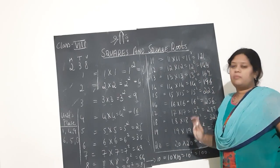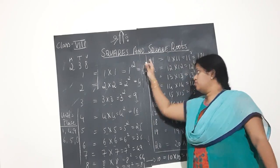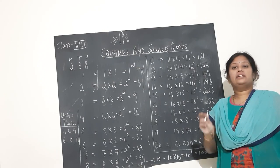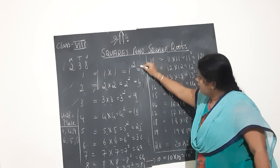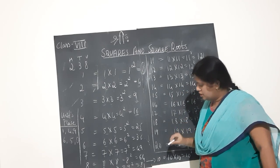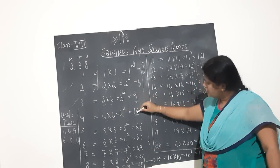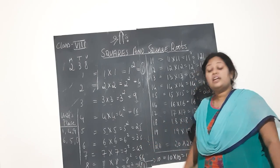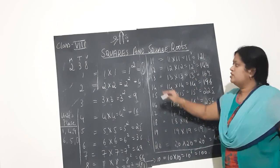Let us pick a few numbers whose squares have 1 in the units place. We can take 1 squared. Next, in 9 squared, we have 81 — again 1 in the units place.